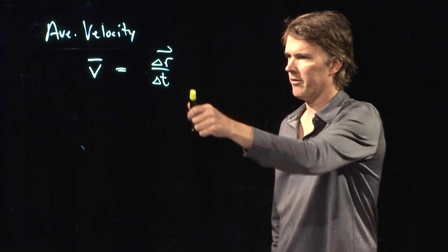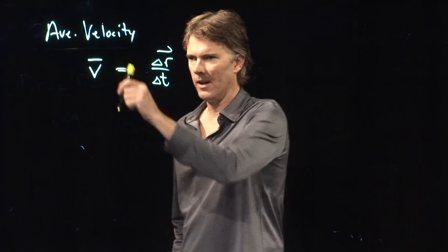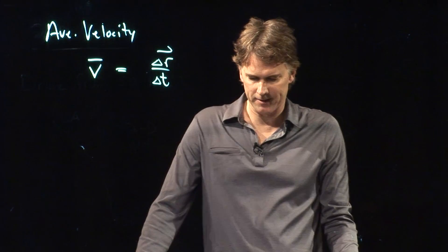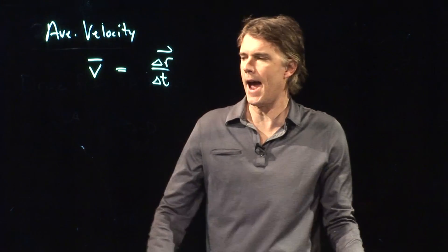Delta R is a vector. Delta T is, of course, a scalar. V is, therefore, a vector. That's your average velocity.